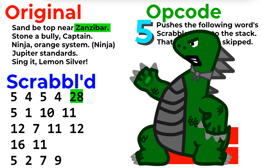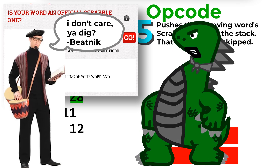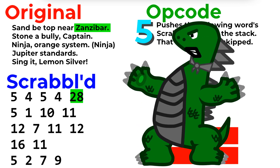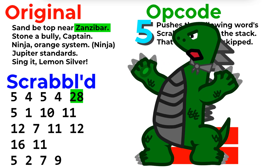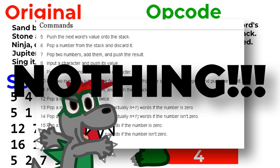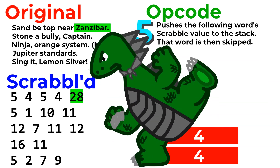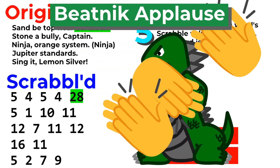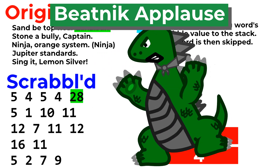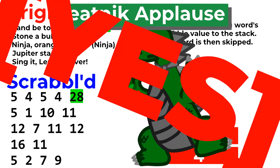Wait, Zanzibar? That's not a valid Scrabble word! Even though it totally should be! Well, that doesn't matter. You know what does matter? Zanzibar has a Scrabble score — or at least it would have a Scrabble score — of 28! That's not a valid Beatnik opcode! Values with an opcode over 17 do nothing! But having a value greater than 23 gives you Beatnik applause! Really? That's your reason for randomly putting Zanzibar here? Yes!